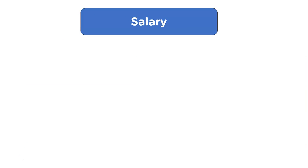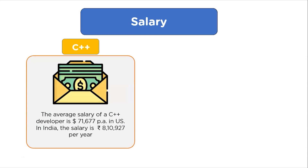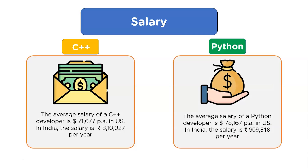Coming to the last factor — salary comparison. The average salary of a C++ developer is $71,677 per annum in the US, and in India it is ₹8,10,927 per annum. For Python, the salary of a mid-level Python developer in the US is higher, and in India it is ₹9,09,818 per annum. This concludes the comparison between C++ and Python.